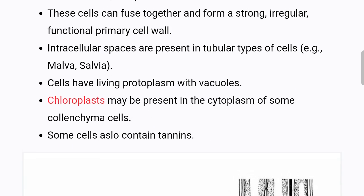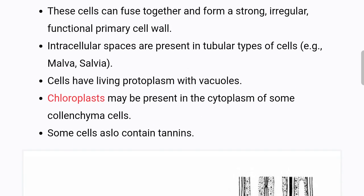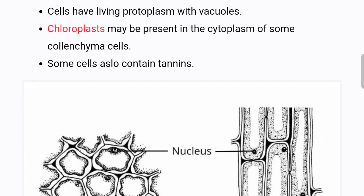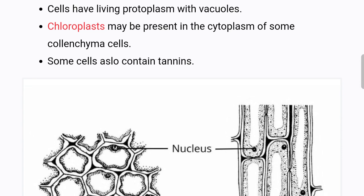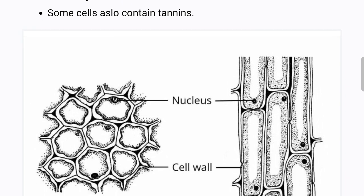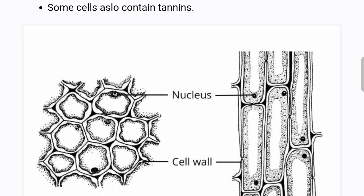These cells can fuse together and form a strong, irregular, functional primary cell wall. Intracellular spaces are present in tubular types of cells. Cells have living protoplasm with vacuoles. Chloroplasts may be present in the cytoplasm of some collenchyma cells, and some cells also contain tannins.